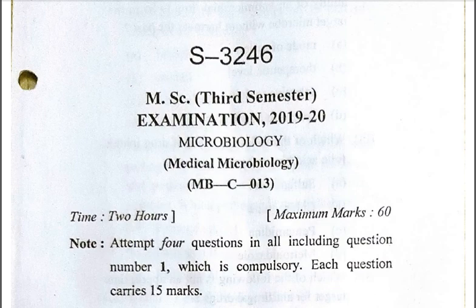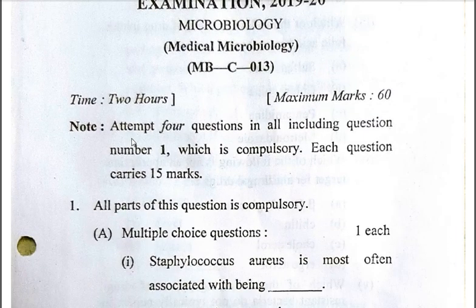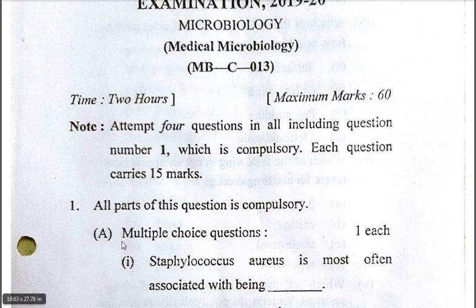It is also useful for the preparation of GATE and the CSIR NET Life Sciences examination. This question paper has eight questions; four questions have to be attempted. The maximum marks is 60, the time limit is two hours. Question number one is compulsory, each question carries 15 marks. Question number one — all parts of this question are compulsory. Part A is multiple choice questions, each part carries one mark.